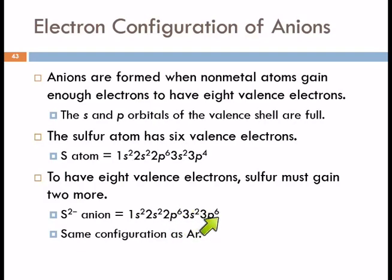So now we have right here eight valence electrons. And this is the same electron configuration as argon. But this is S2 minus the sulfide anion.